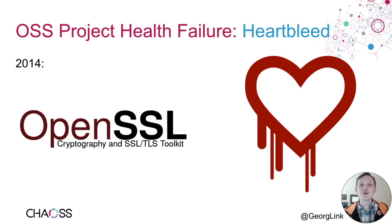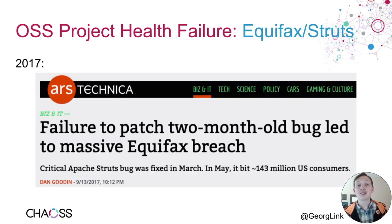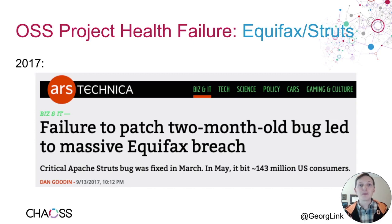Another example — let's travel forward in time to 2017. Another big earthquake, so to speak, especially in the United States, was the data breach at Equifax. Equifax was using an open source software, the Apache Struts framework, but failed to update it to close a known vulnerability. Several months later, the hackers exploited this known vulnerability, even though the open source community had already released an update.